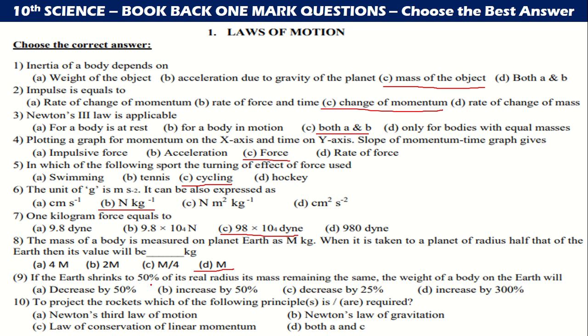If the Earth shrinks to 50% of its real radius, its mass remaining the same, the weight of a body on the Earth will increase by 300%. To project the rockets, which of the following principles is required? Both A and C.